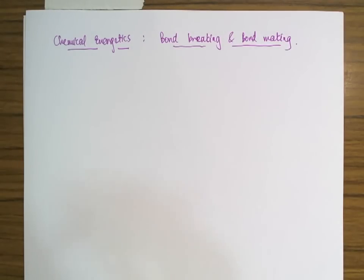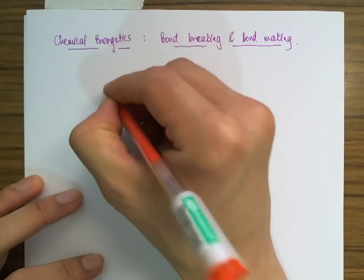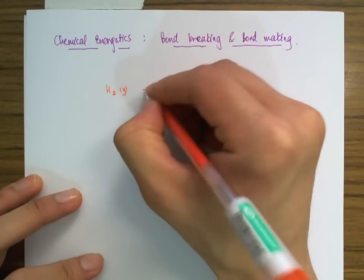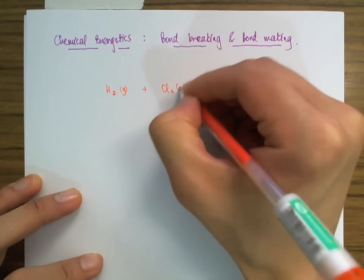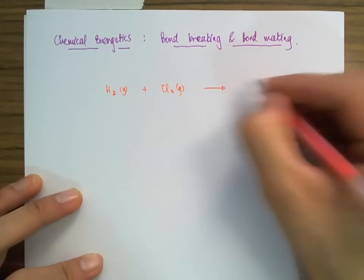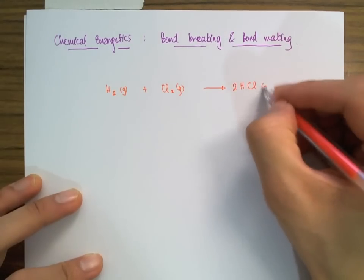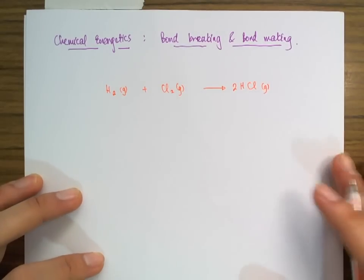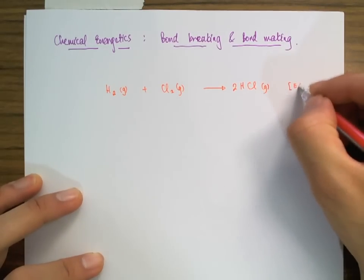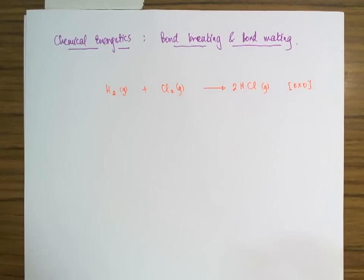Let's take a look at an example. Say I want to react hydrogen gas with chlorine gas and in the process form hydrogen chloride gas. It turns out that this reaction is exothermic. So let's take a look at the mechanics of what's actually going on — what do we have to do to make these react?